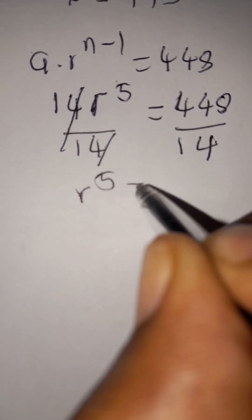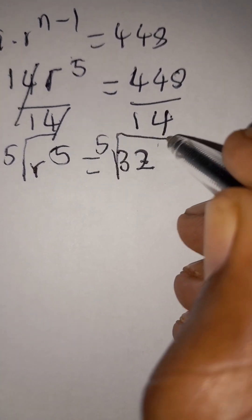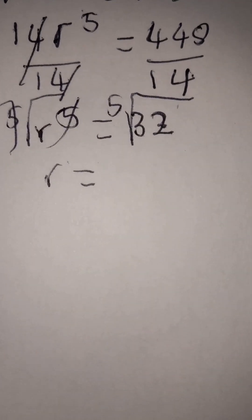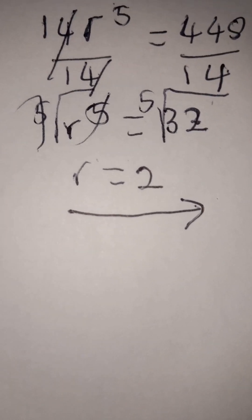Dividing both sides by 14, we get r^5 = 32. Taking the 5th root of both sides: the 5th root of 32 equals 2, since 32 = 2^5, and (2^5)^(1/5) = 2. Therefore r = 2.